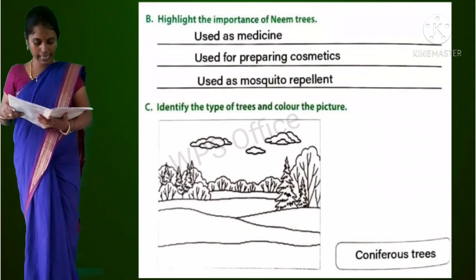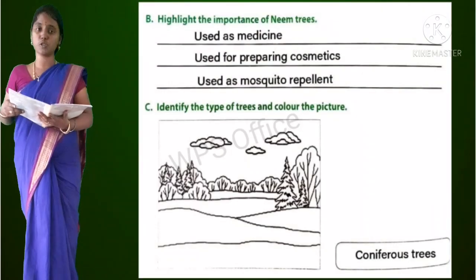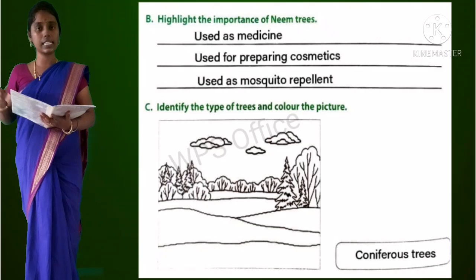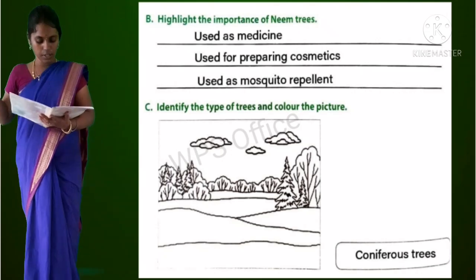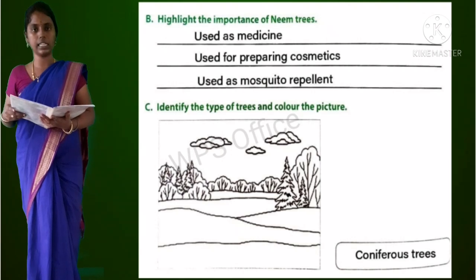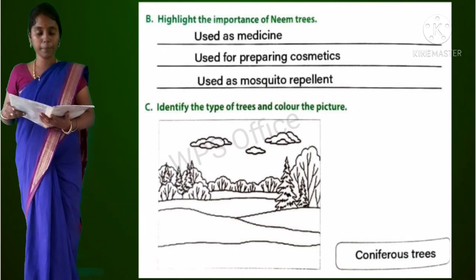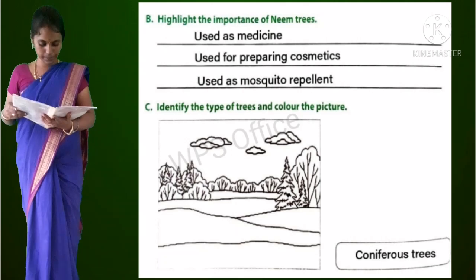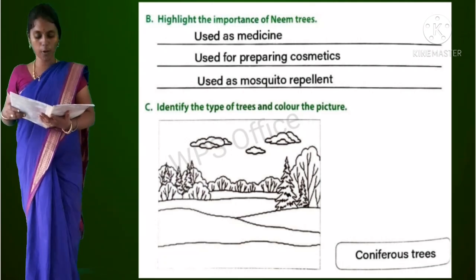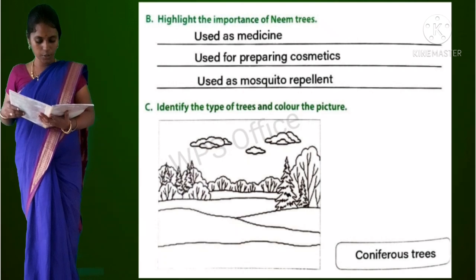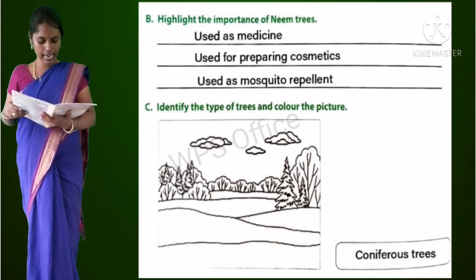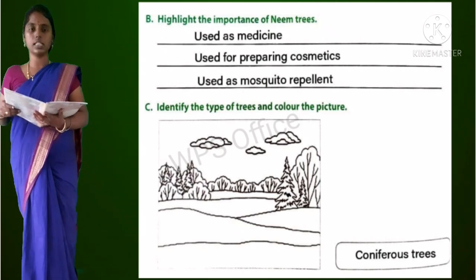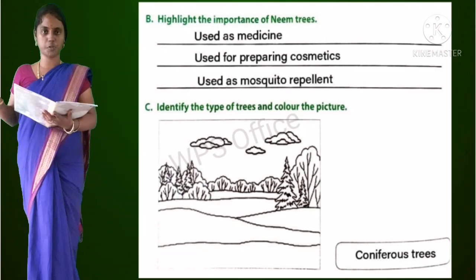Section B: Highlight the importance of neem trees. Used as medicine, used for preparing cosmetics, used as mosquito repellent. Section C: Identify the types of trees and color the picture. These are coniferous trees.